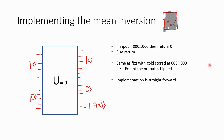Now let us see how the mean inversion is implemented. The mean inversion function looks very similar to the oracle. The input is an n-bit number x and an f(x) — or rather the mean inversion value. The result expected here is: if the input is all zeros, the output is zero.